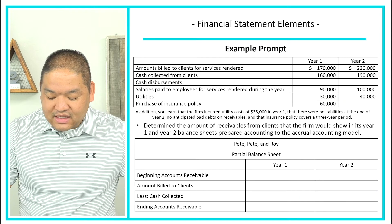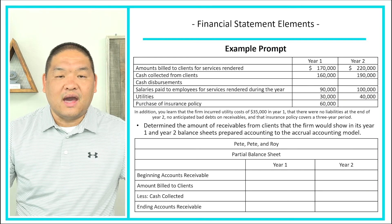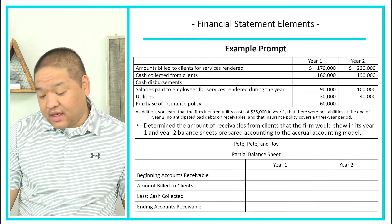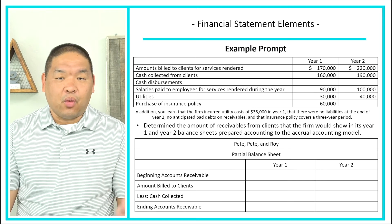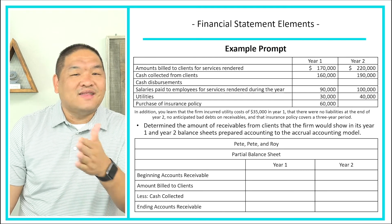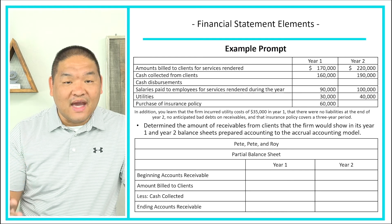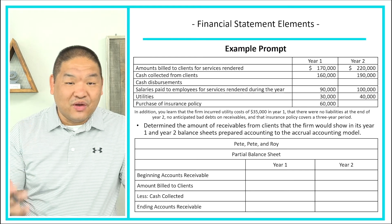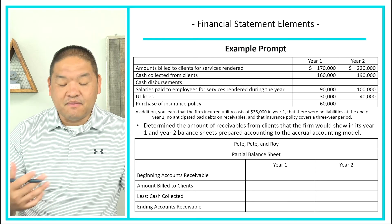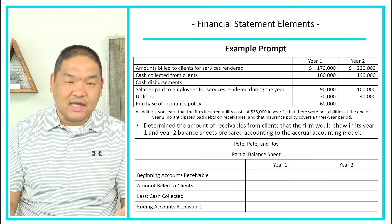The last part asks us to determine accounts receivable from clients on the balance sheet under the accrual method for years one and two. We set up a rollforward table: beginning balance, plus amounts billed, minus cash collected, equals ending balance. This mirrors the T-account equation: beginning plus or minus activity equals ending.